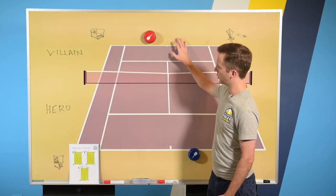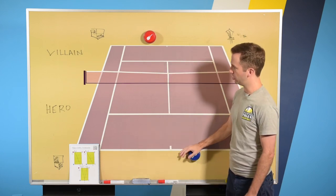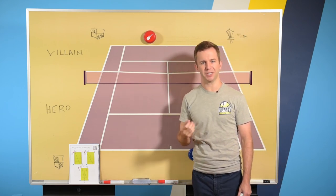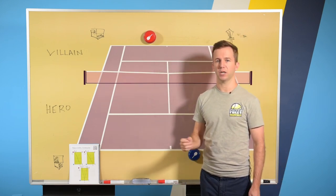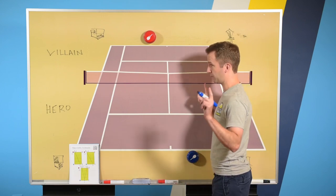All right, so we saw Rafa up here running it against Gasquet down here. We're going to reverse that and talk about how you as hero can run it against Villain, but then we'll come back and watch Rafa do it one more time so you can see the nuances of exactly what is going on. So, the first shot you are going to hit, again, as just a reminder,